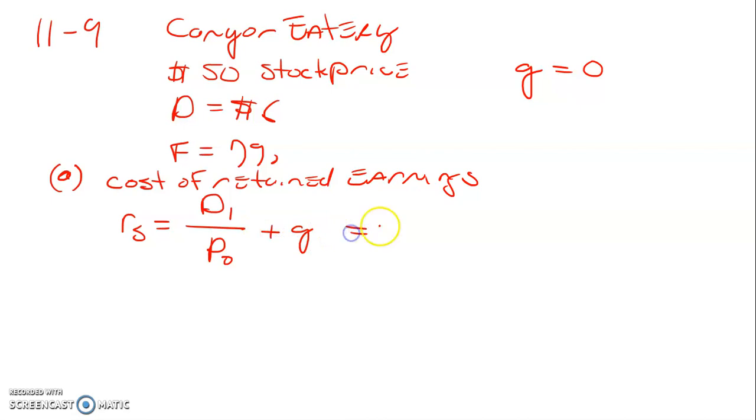The growth rate is 0. Our dividend is not growing. So in this case, it's just 6 divided by 50, which equals 0.12 or 12%.